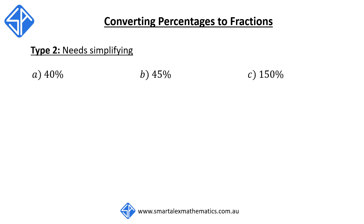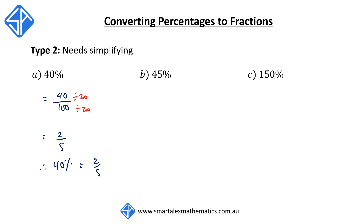The next type is slightly harder because this time we need to simplify the fraction. For question A, 40% — we can write this as 40 out of 100. We can simplify this fraction further by dividing both top and bottom by the common factor of 20. This reduces it to 2 over 5. Therefore, 40% is equivalent to 2 fifths as a fraction.